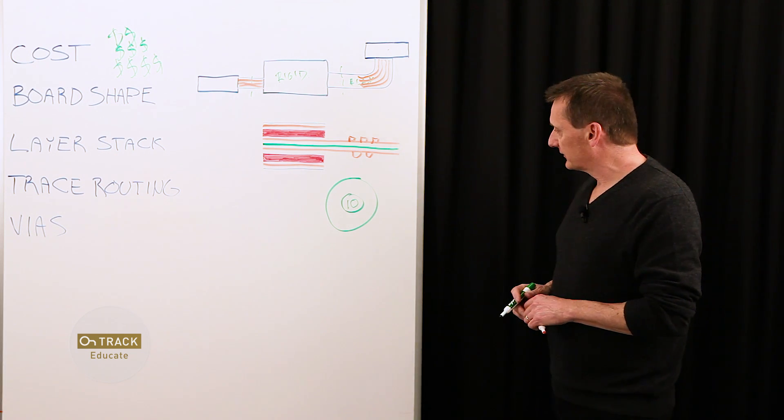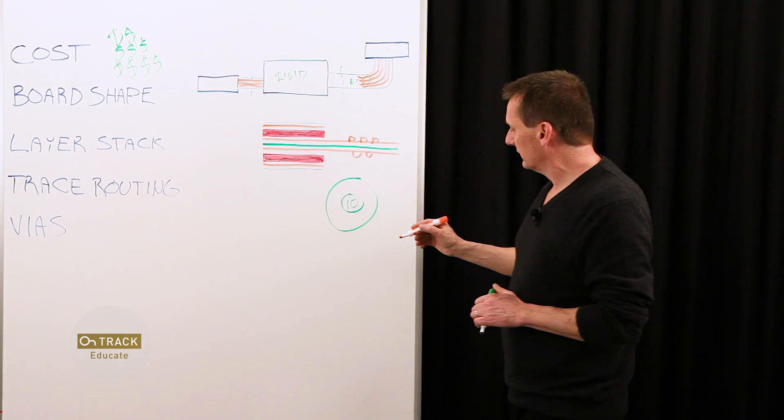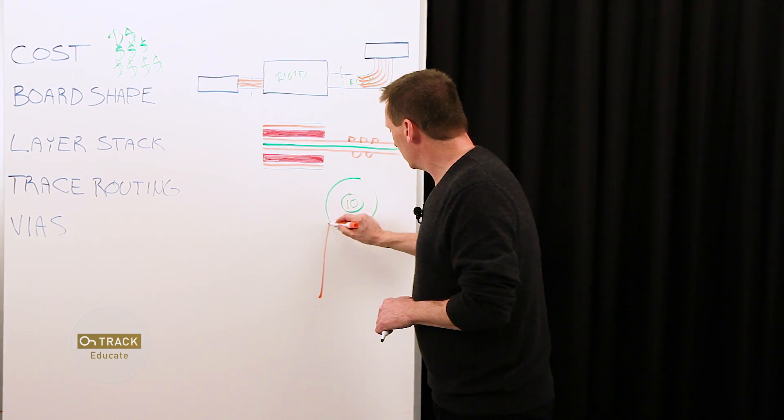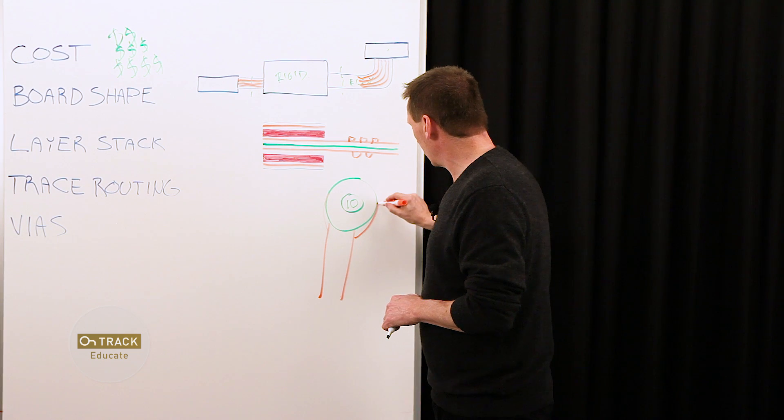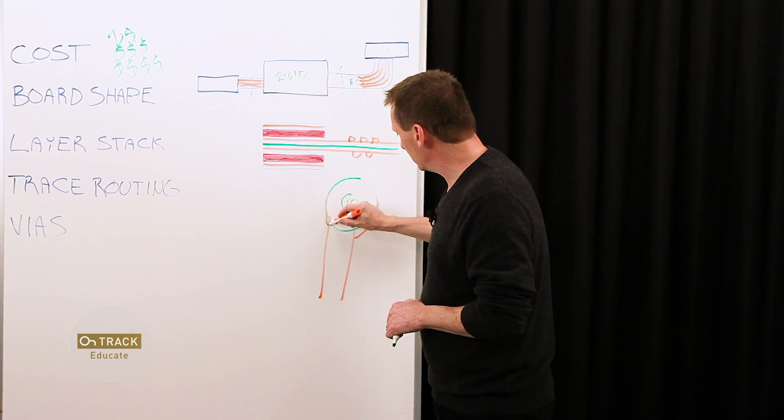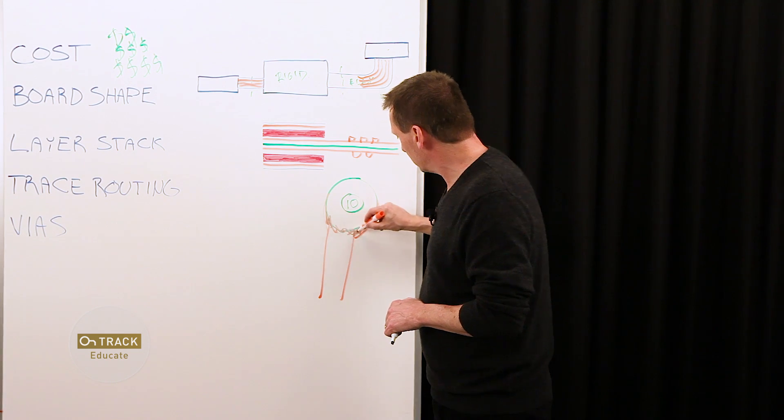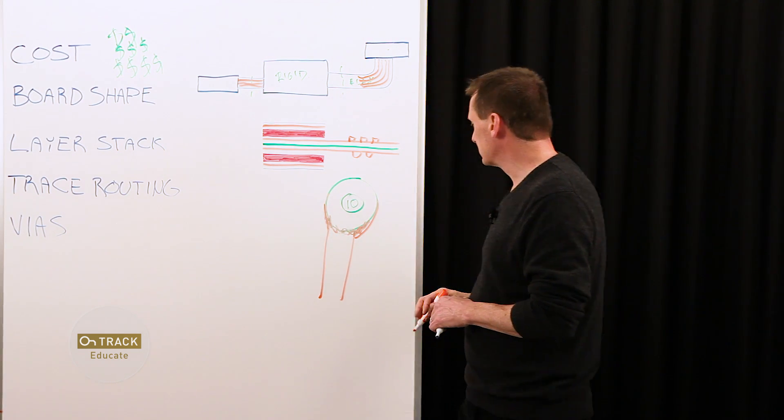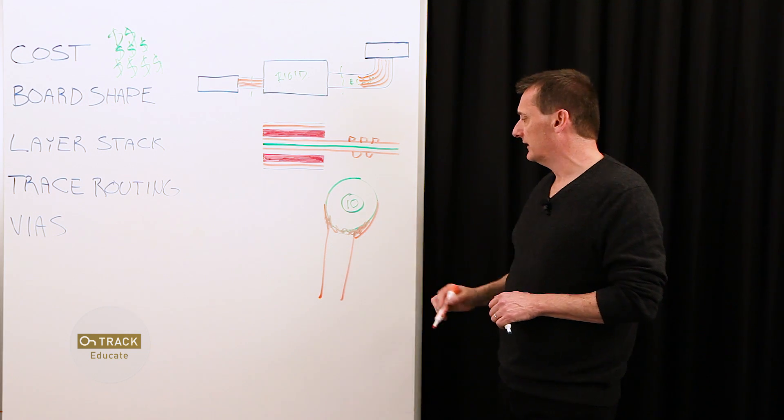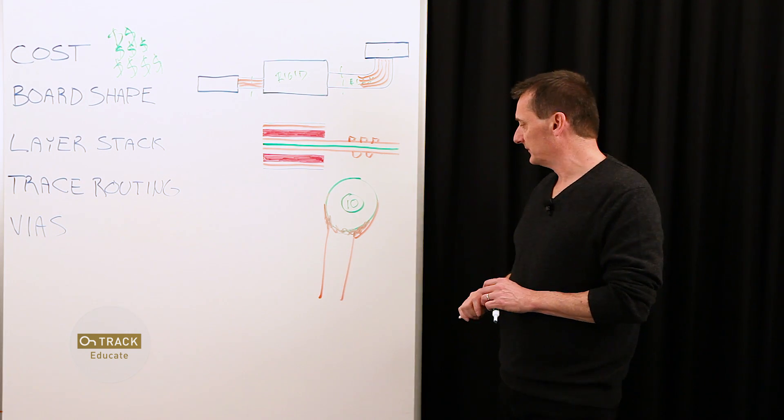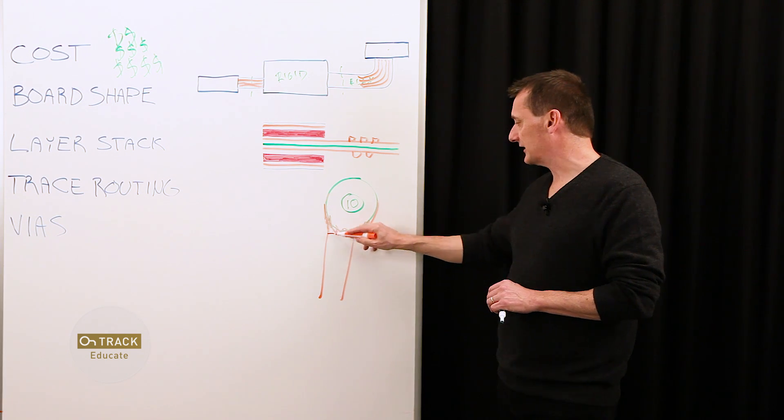Another consideration is that when we route traces to the via, we use teardrops. Teardrops expand the copper so that we end up with a more structural connection to the via itself. You're reinforcing that copper area, again, to minimize fatigue and potential cracking over time.